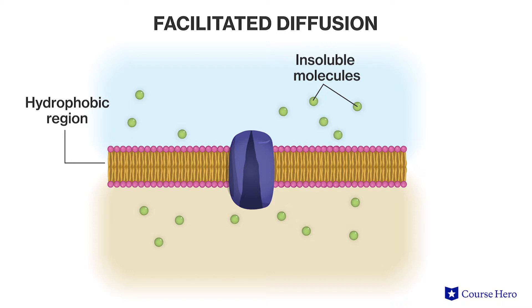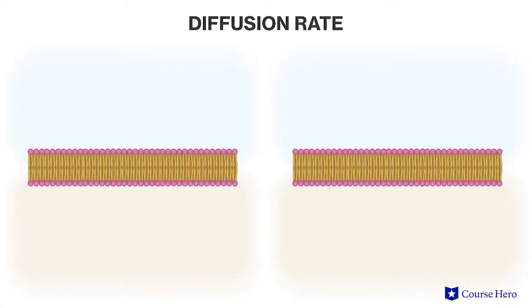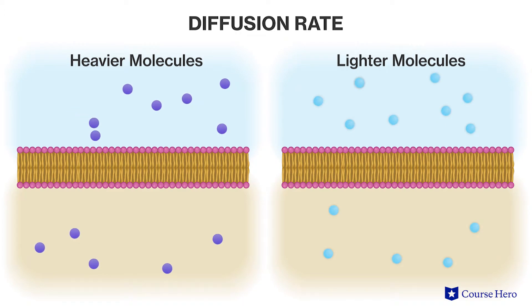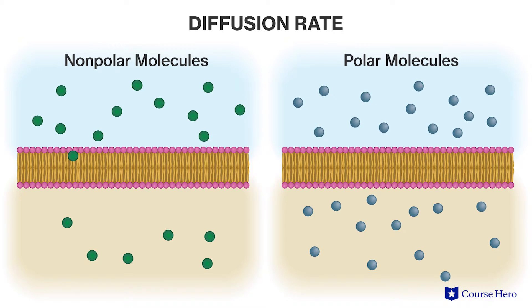Keep in mind that the rate of diffusion is limited by the number of specific transport proteins in the membrane. In addition to the number of transport proteins, there are several other factors that can affect diffusion rate. One factor is the nature of the diffusing substance — heavier molecules diffuse much more slowly than lighter molecules, and nonpolar substances diffuse across the membrane at a higher rate than polar substances, as they are more soluble in the cell membrane's phospholipid bilayer.